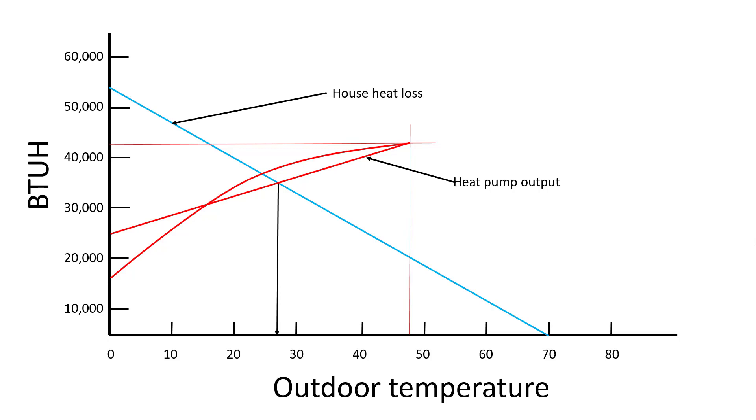On an inverter unit the output is going to look more like this. For our demonstration we're looking at a balance point for a SEER 13 or 14 heat pump to be somewhere around 27 degrees with this particular house.